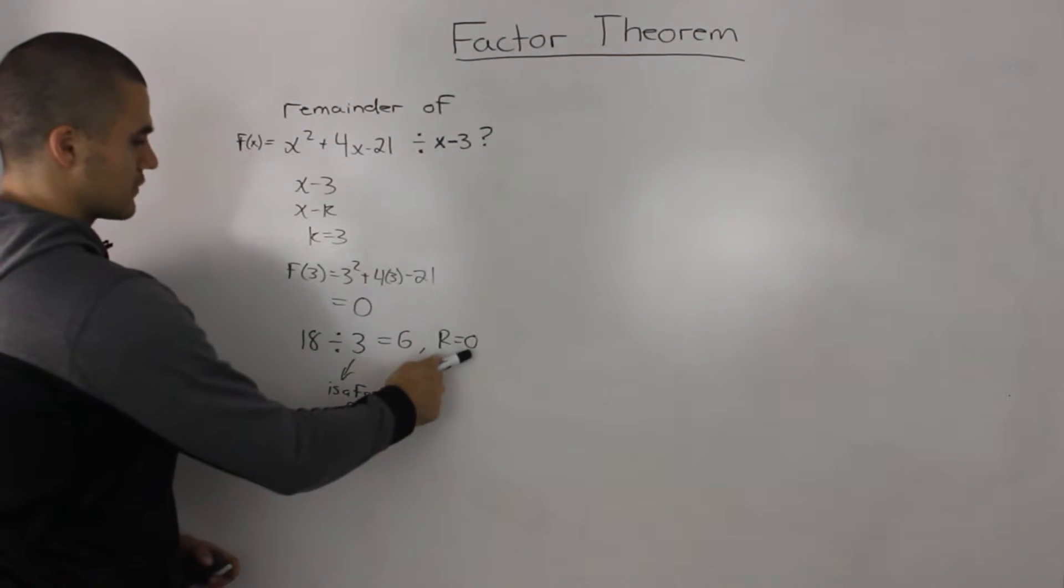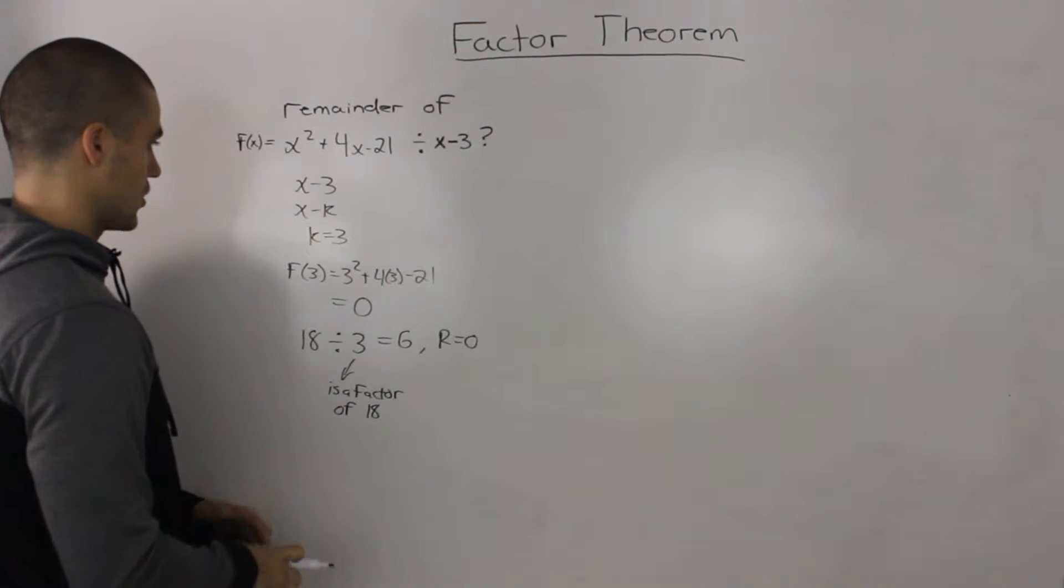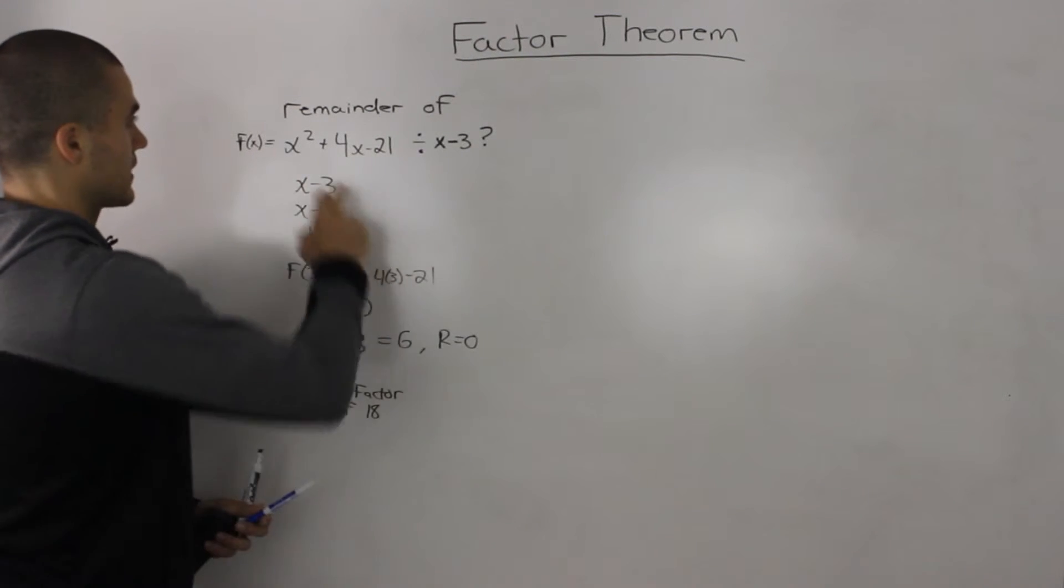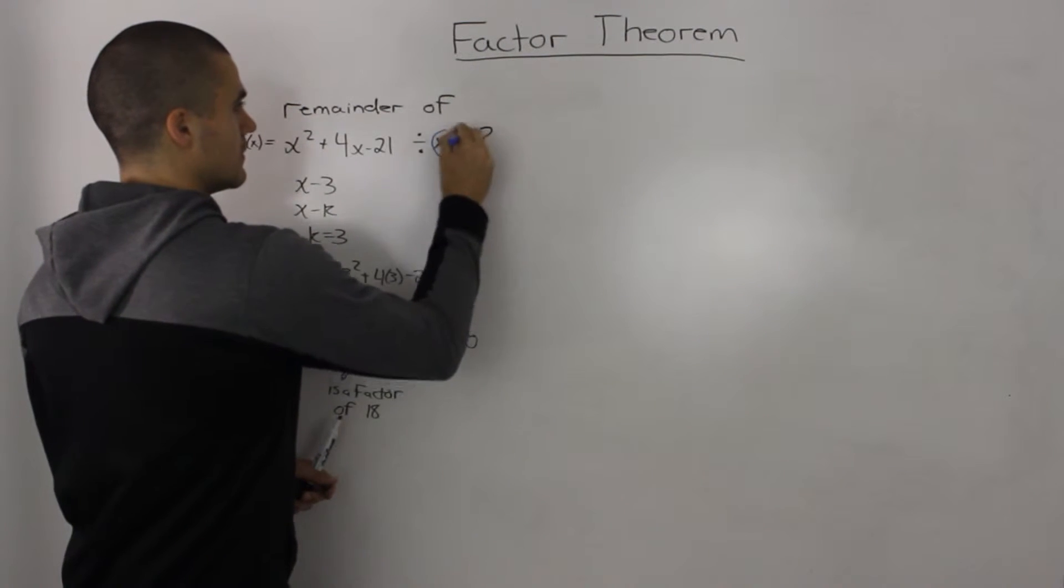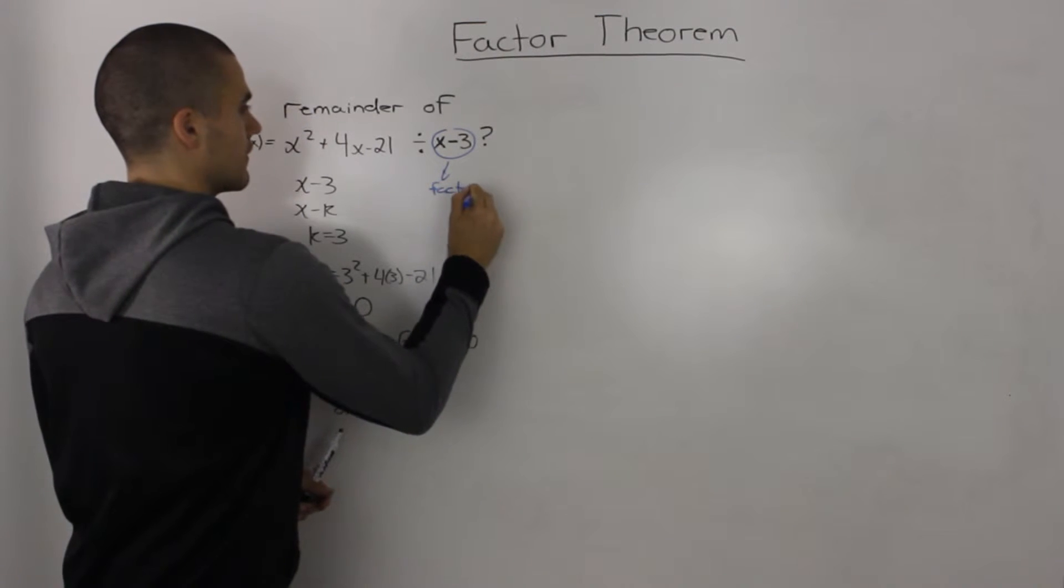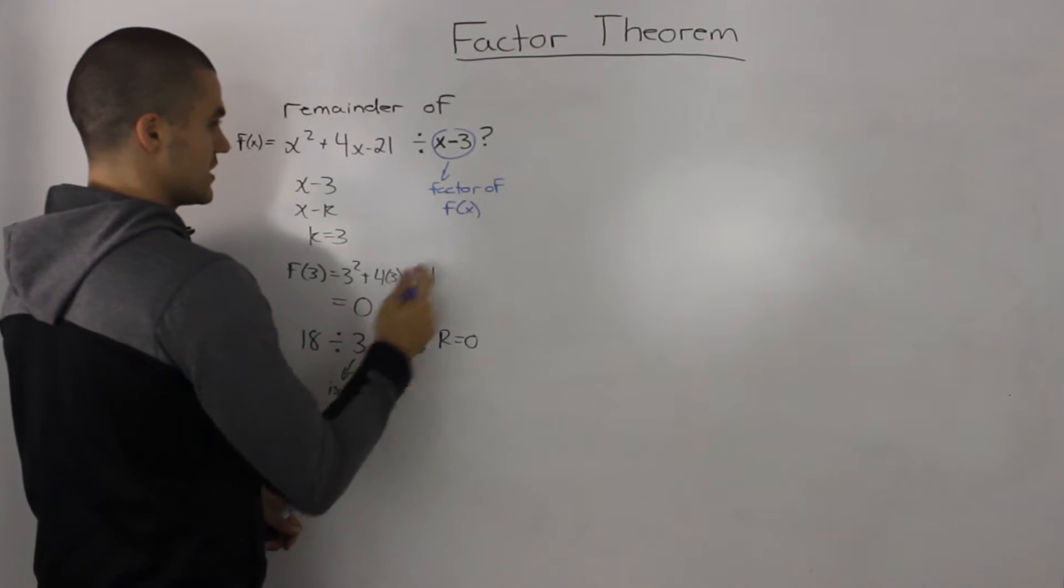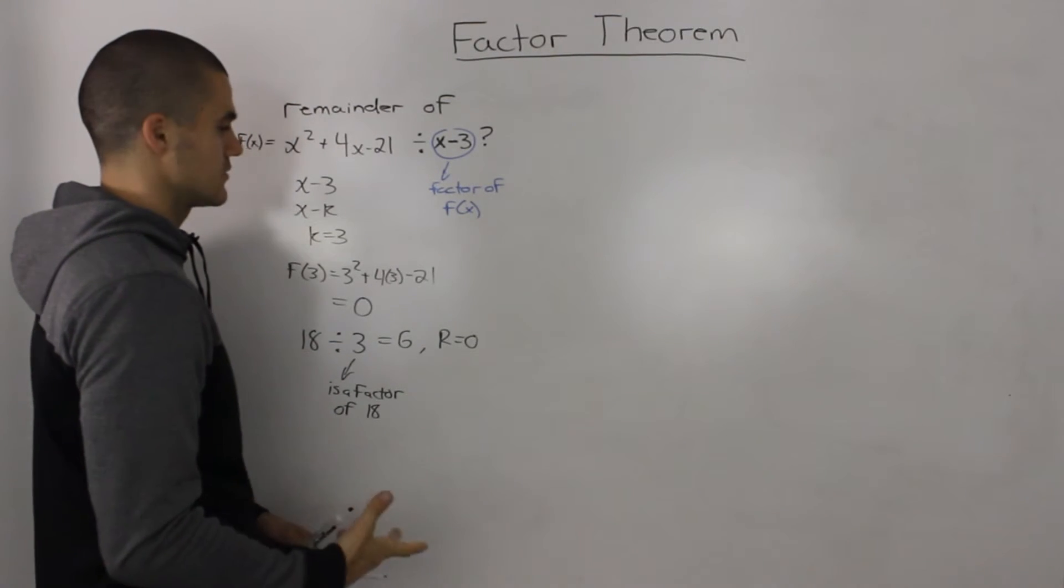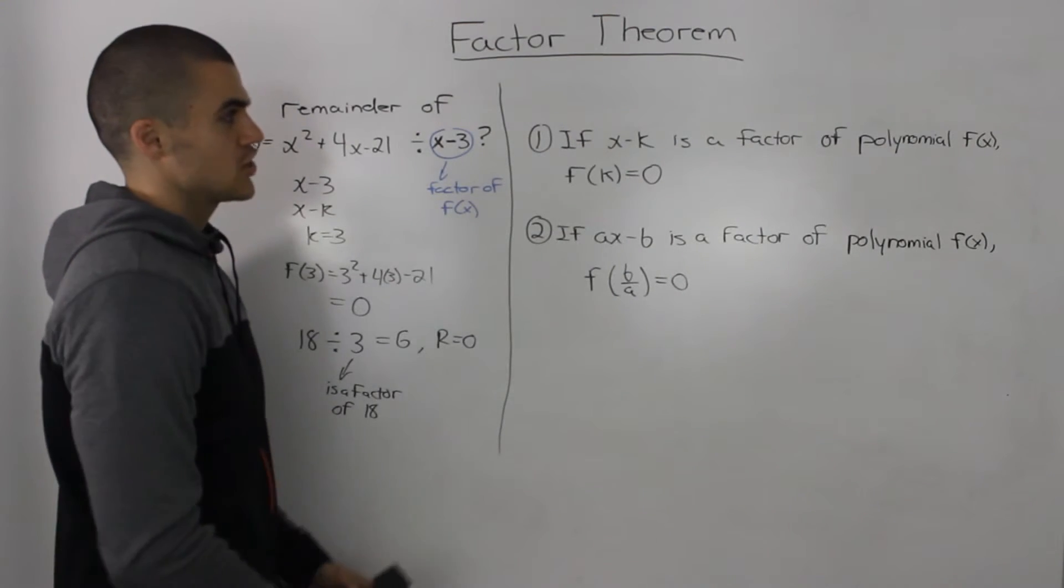Whenever you get a remainder of 0, the divisor is a factor of the dividend. So in our case, if we go back here, this x - 3 is a factor of f(x) because the remainder is 0.